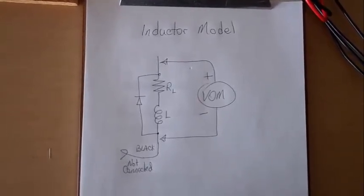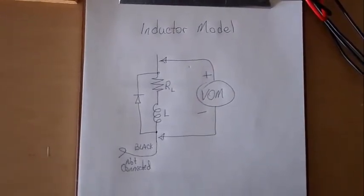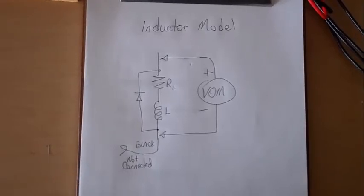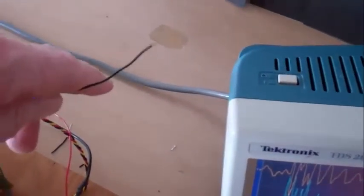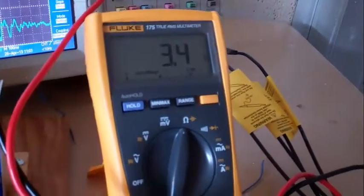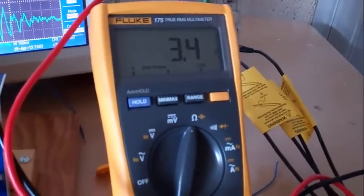Measuring the inductor resistance, this is the inductor model. No power is applied, the ground wire is not connected, and the resistance is 3.4 ohms.